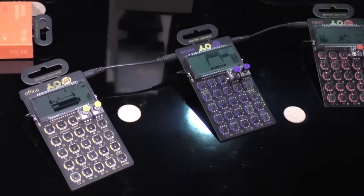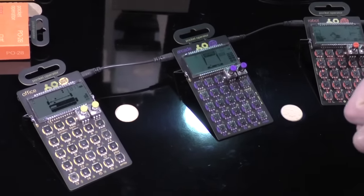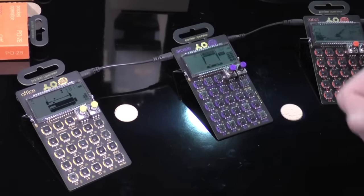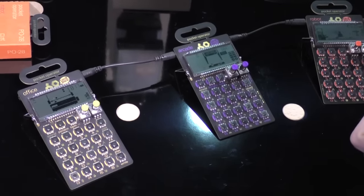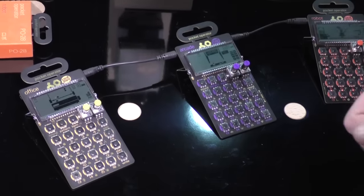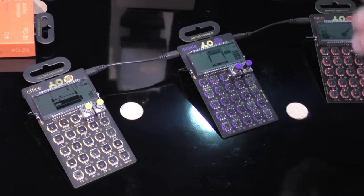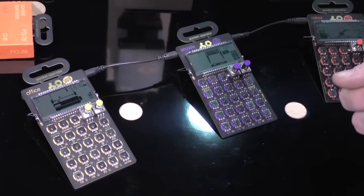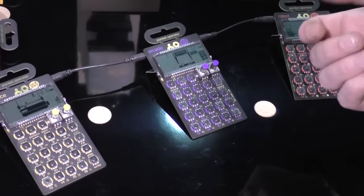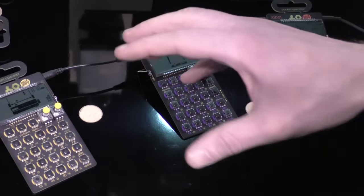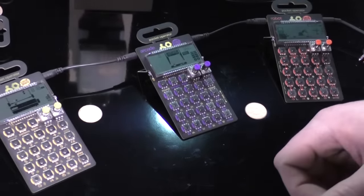And the second one is Office, and what we did is we sampled sounds from pretty much office machines that you would find in an old office, like a matrix printer, a disk eject, and a mouse click. It's a really good rhythm machine.